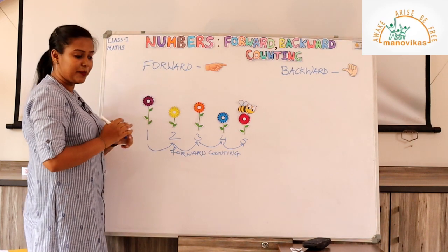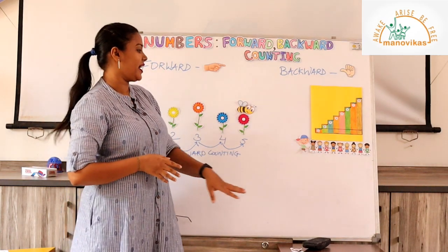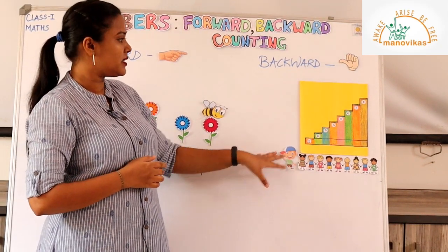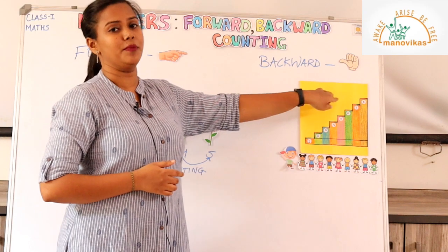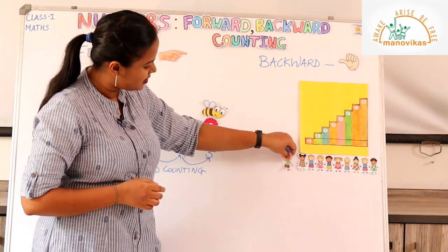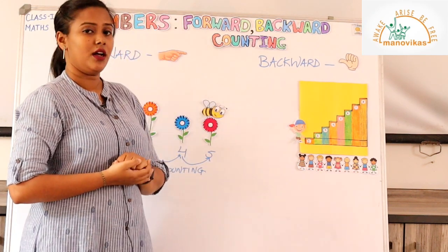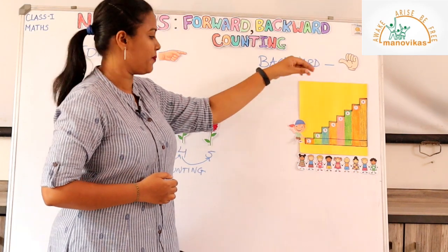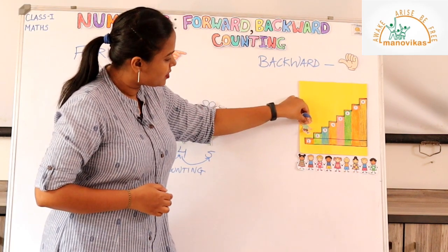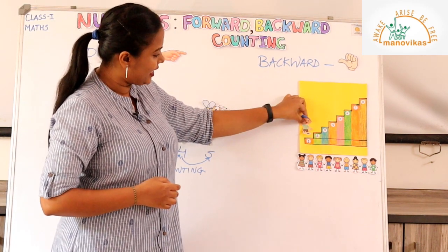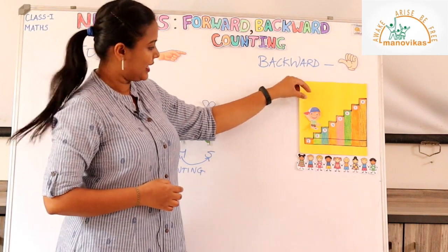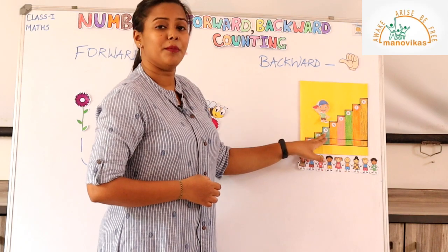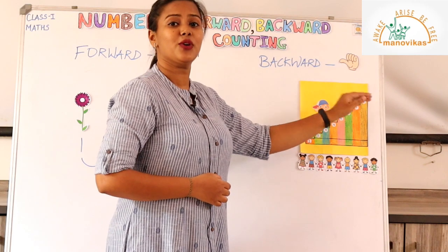Now let's take another example. Say these are all your friends and you are playing in a park. One of your friends sees some steps and wants to climb up. He runs and goes near the steps, then steps on step number 1, slowly moves to step number 2, then step number 3. Now he has to reach step number 8, so he continues climbing.